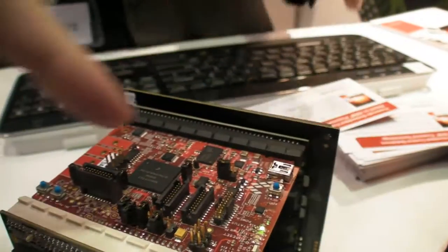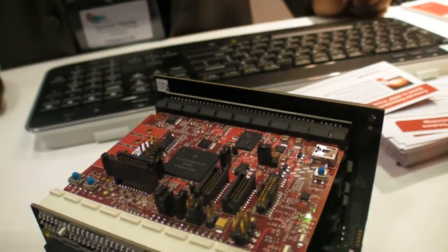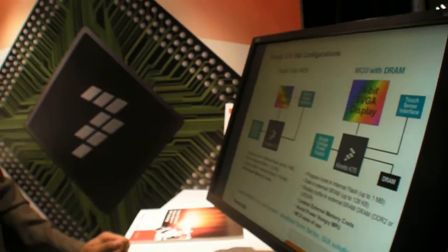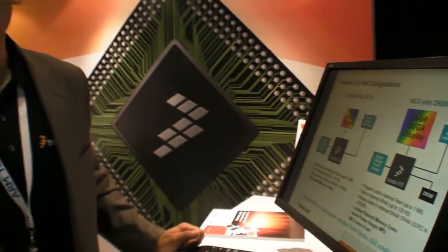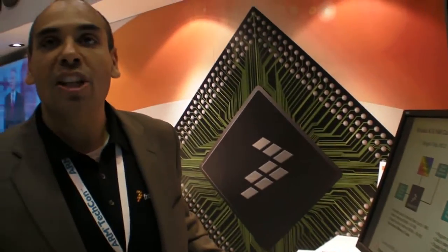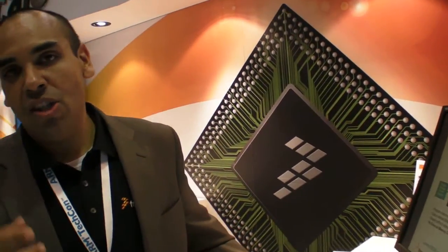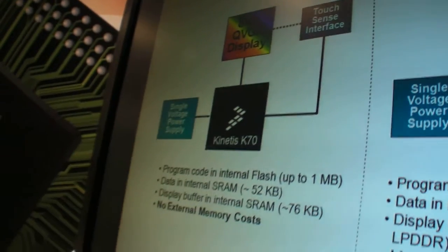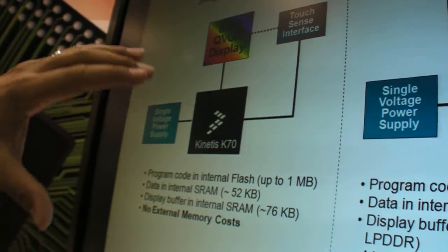This is a device that has up to one megabyte of flash, 128 kilobytes of SRAM, and it has a lot of memory expansion options. It has DDR, but it also has a NAND flash controller integrated on the device. So this is some of the information in regards to the K70.